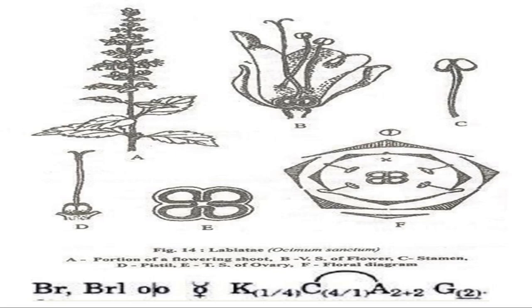Here is the twig of Ocimum sanctum with its inflorescence. This is the vertical section of the flower showing stamens and gynoecium. The stamen has a filament and a dithecous anther. The pistil shows the ovary, style, and biparted stigma. This is the T.S. of the ovary and the floral diagram. The floral diagram shows bractiate, bracteolate flowers with imbricate aestivation in sepals and petals, and epipetalous stamens (stamens attached to petals).